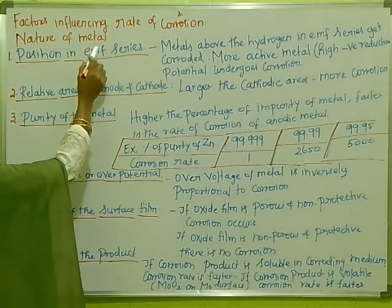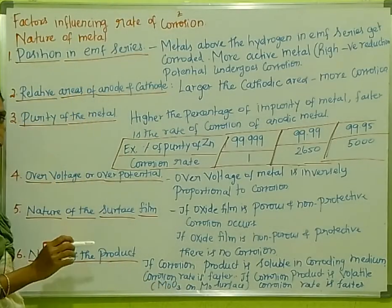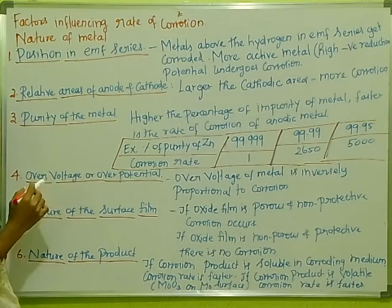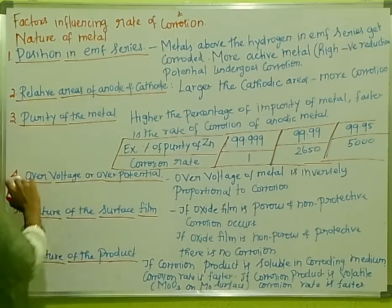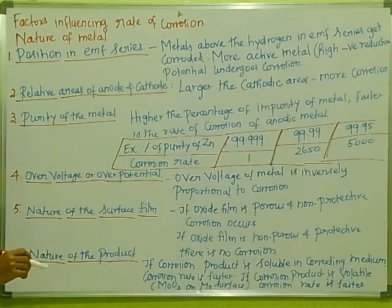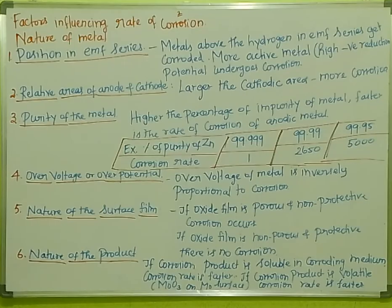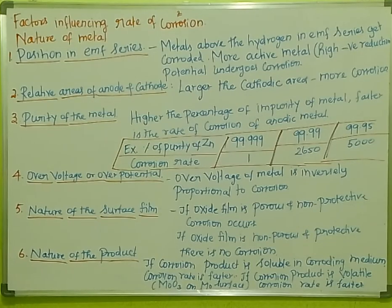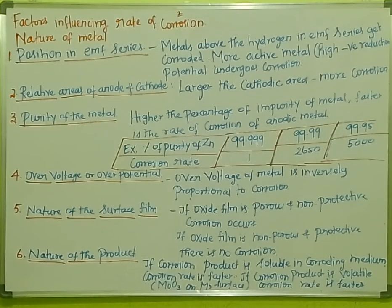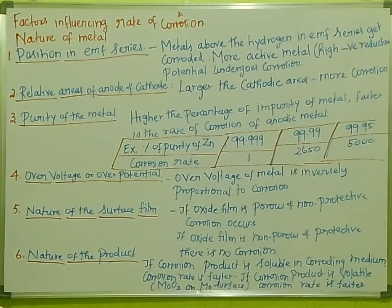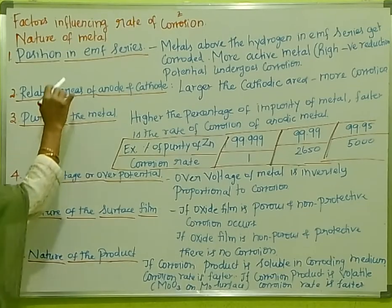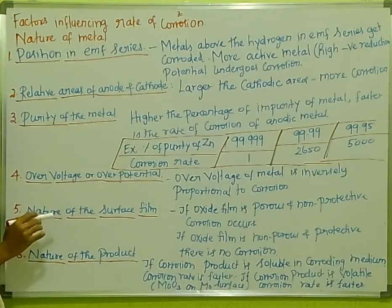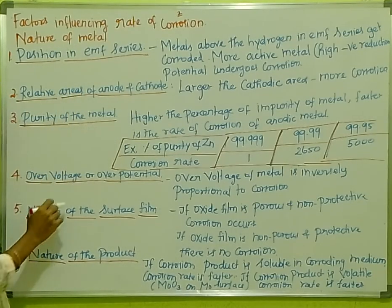What are the factors affecting the rate of corrosion? One thing that we know is the nature of the metal and the nature of the environment. These are the two broad categories of factors.